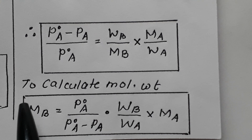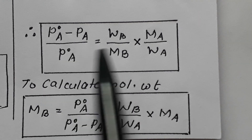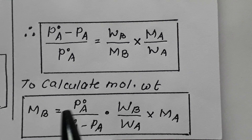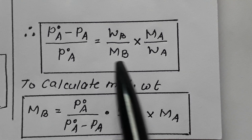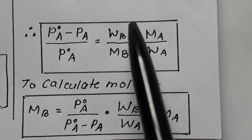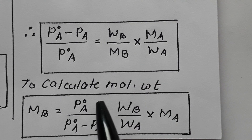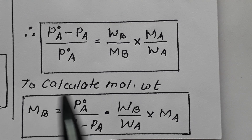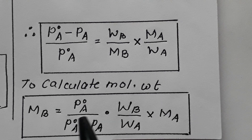The same equation can also be used to calculate the molecular weight of an unknown solute, which is MB. Rearranging the formula, MB equals (P0A upon (P0A minus PA)) into (WB upon WA) into MA. This formula is very important for numerical problems.